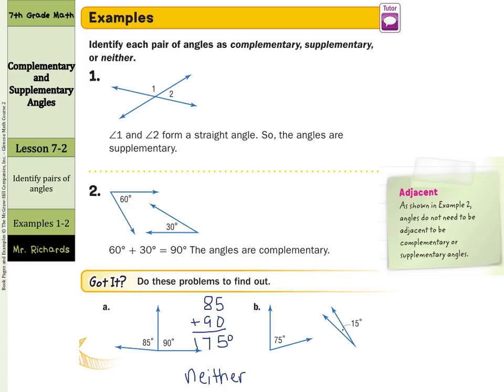And if I add up the angles in example B, 75 plus 15, that is 90 degrees. So those two angles together form a 90 degree angle, which means they have a complementary relationship. So complementary are two angles that add up to 90 degrees. Supplementary is two angles that add up to 180 degrees.